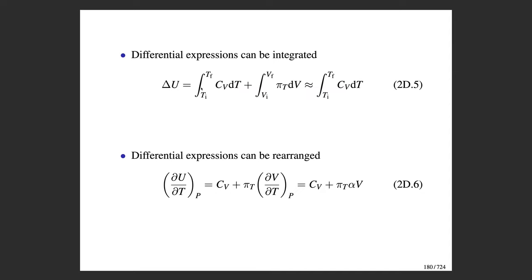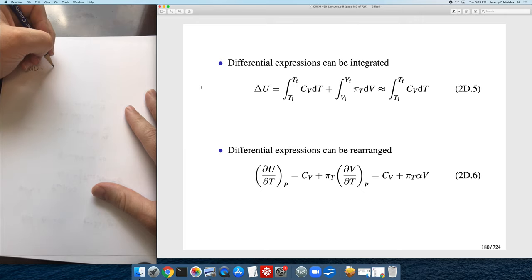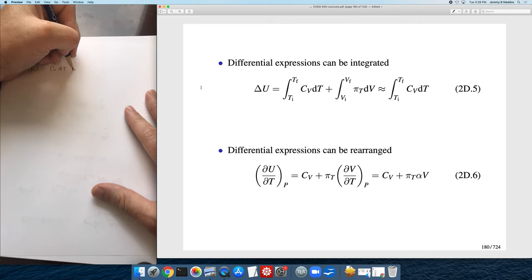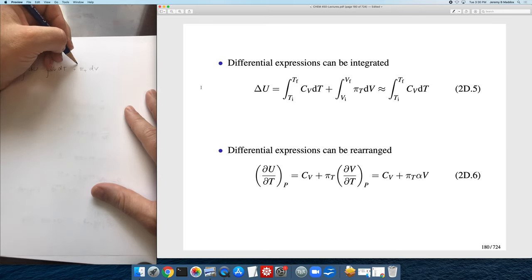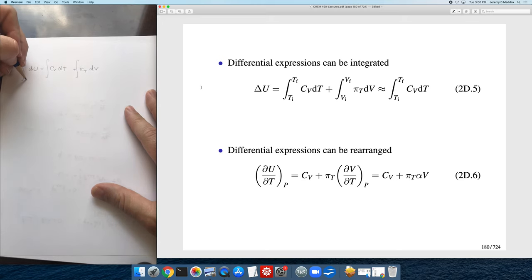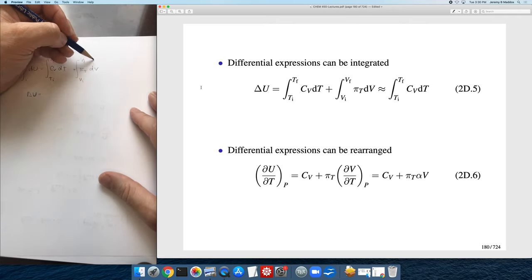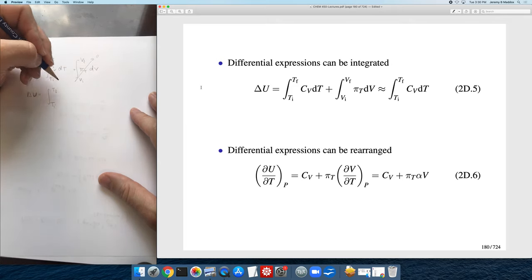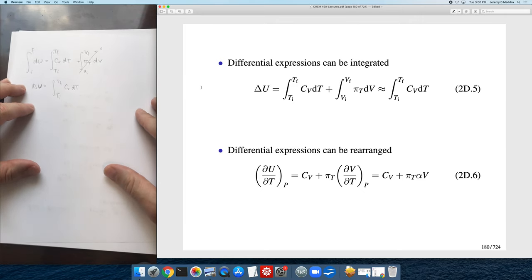You can integrate the total differential expression from the initial state to the final state to get ΔU. Integrating from the initial temperature to the final temperature for the first term, and from the initial volume to the final volume for the second term. For the case of an ideal gas, the internal pressure is zero, and it reduces to an expression we've worked with previously. You can also rearrange the differential expressions — for instance, dividing through by dT and keeping pressure constant.